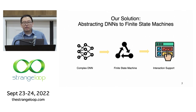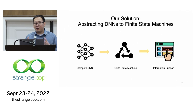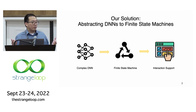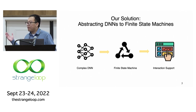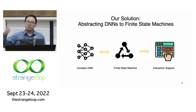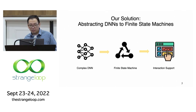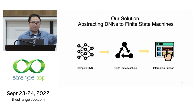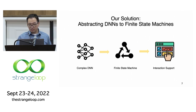Our solution is to transform this complex, unfamiliar neural network back to something we are familiar with — like a finite state machine. In this way, we can bring back all the good stuff we have in the traditional programming world, like stepping through each state and inspecting the state values in the finite state machine.